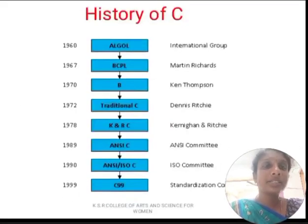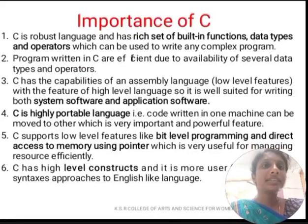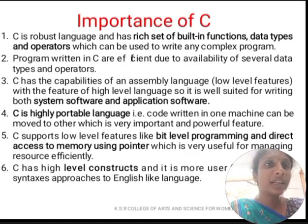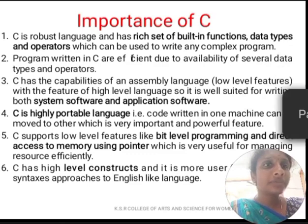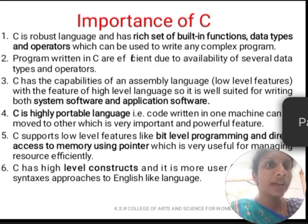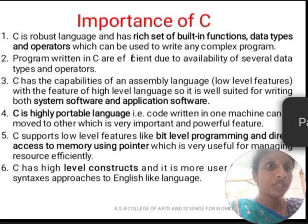Next, we are going to see about C and the history of C. C is a robust language with a rich set of built-in functions, data types, and operators which can be used to write any complex program. C is efficient due to availability of several data types and operators, and has the capability of an assembly language combined with features of high-level languages. It is well suited for writing both system software and application software. C is highly portable — we can move source code from one platform to another. C also supports lower-level features like bit-level programming and direct memory access using pointers, which are useful for managing resources efficiently.